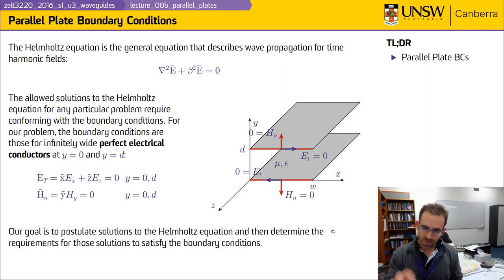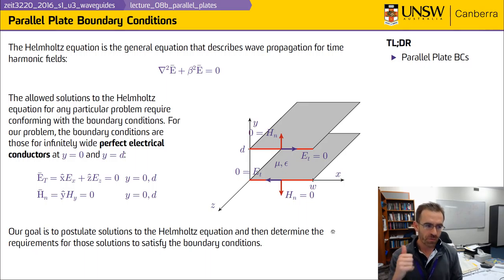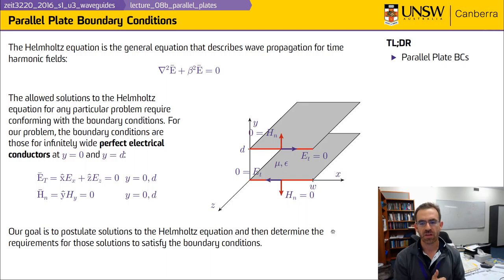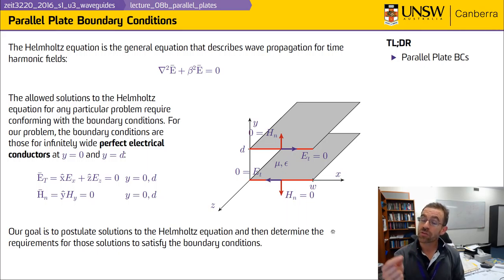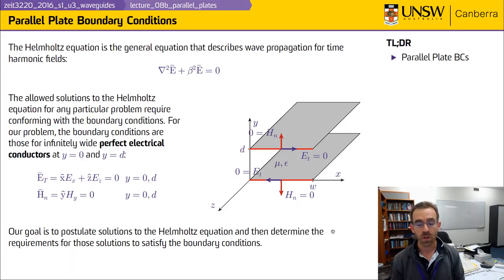What we're going to do in this lecture is we're going to guess — we're going to postulate a solution. The first question is: does that solution satisfy the Helmholtz equation, and under what conditions? Then we're going to determine whether that solution satisfies the boundary conditions and whether we need to make particular modifications. If the solution satisfies the Helmholtz equation and satisfies the boundary condition, then it is an allowed mode of the structure.